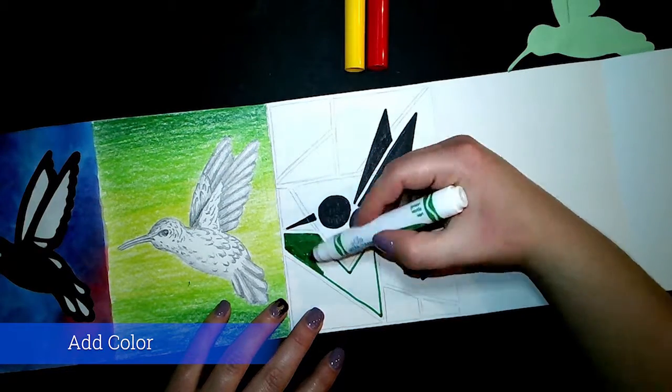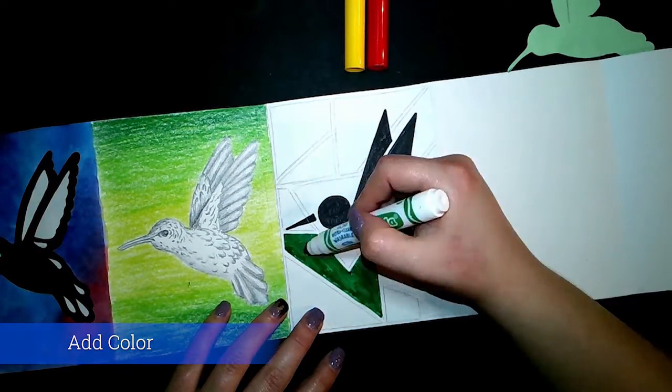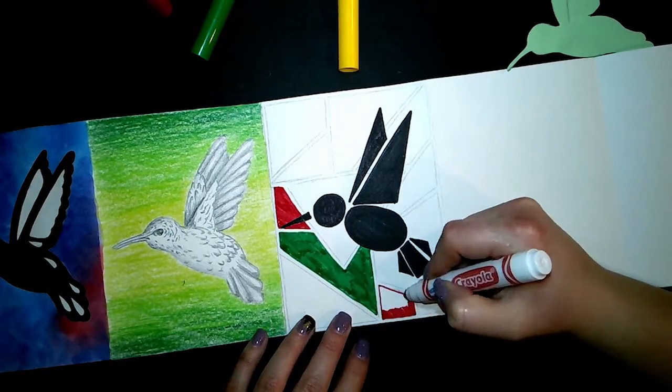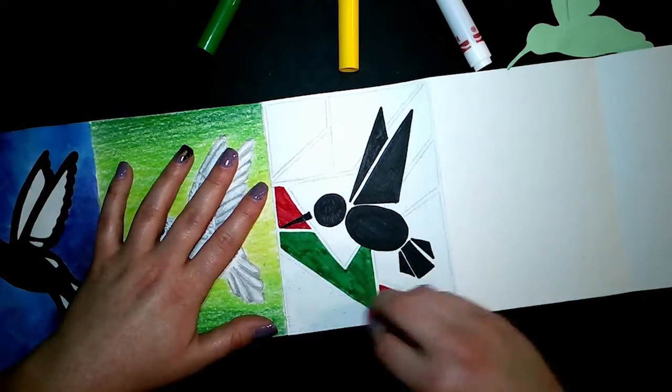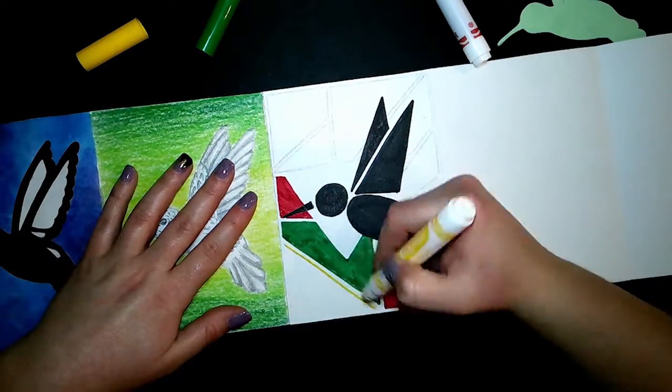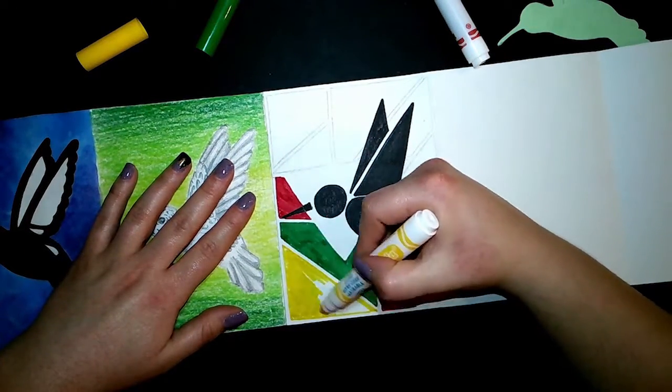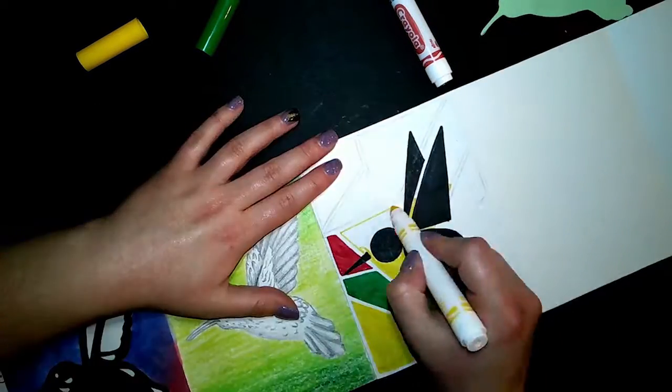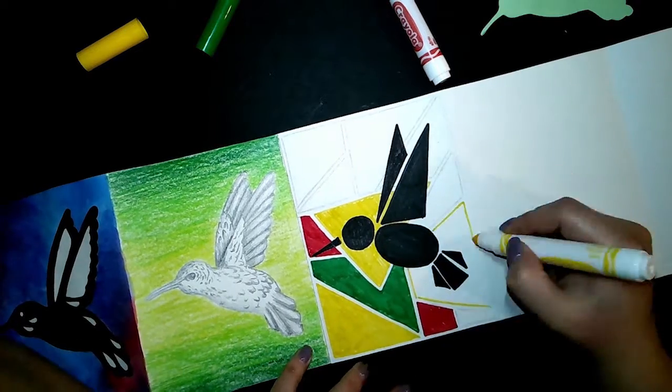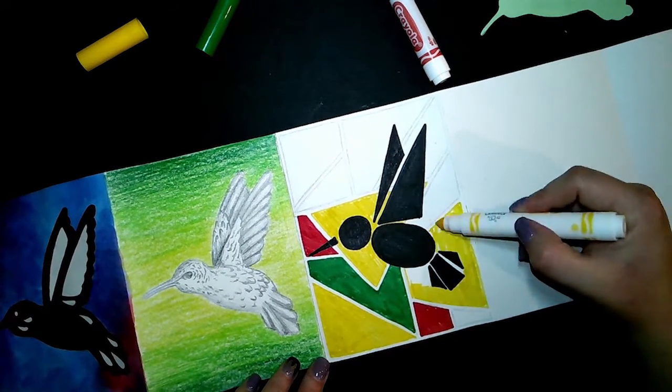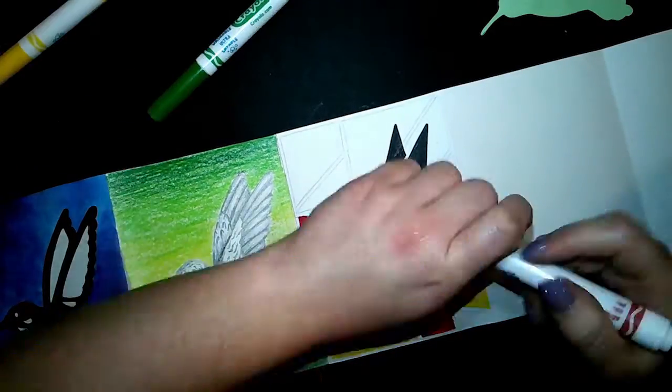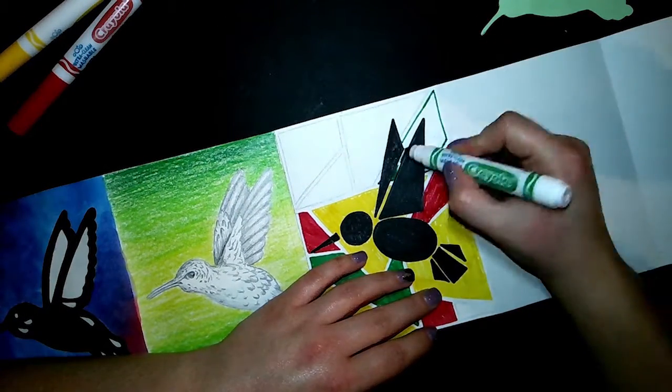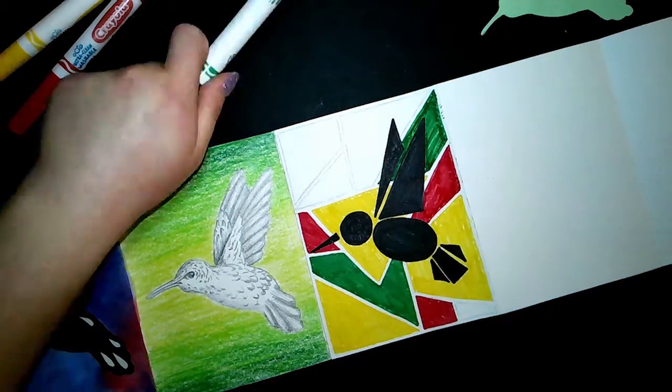I chose green, yellow, and red markers to color into my shapes and I'll just alternate between the three. Remember that anytime you are coloring with anything—markers, crayons, colored pencils—to color in the same direction. That is what professionals do when they are coloring their pictures.